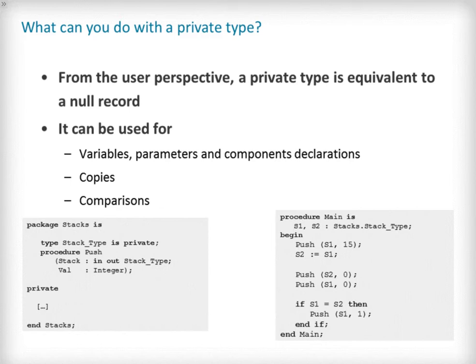Although the implementation of a private type is unavailable to the package user, they are able to use the type in the same way that they would a null record. The package user is free to use it to type objects, specify parameter types and component declarations. They can also be used in copies, assignments and in comparisons.